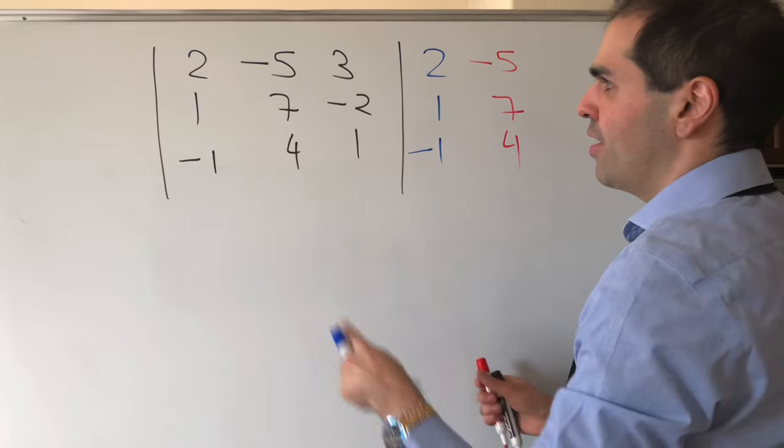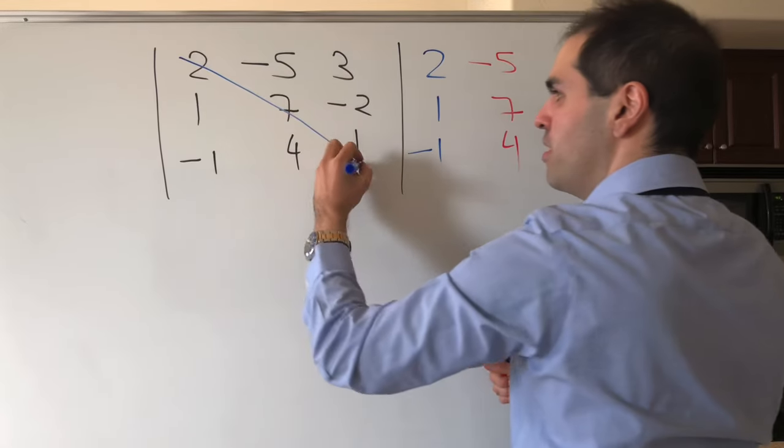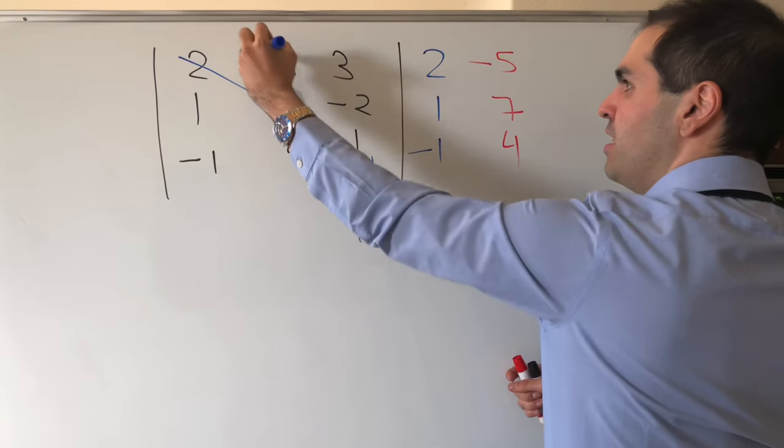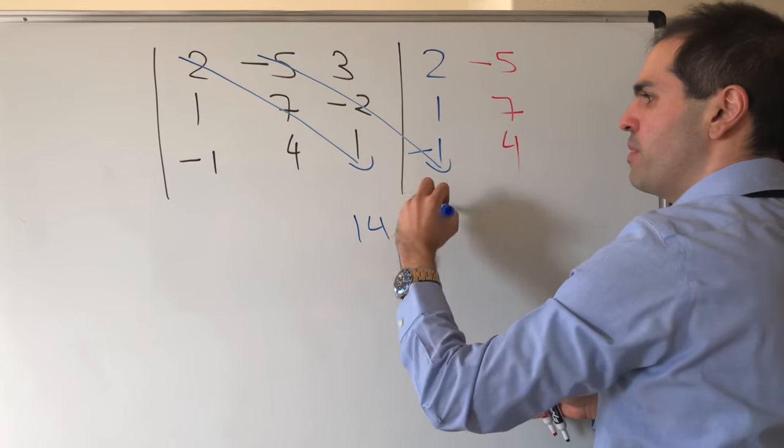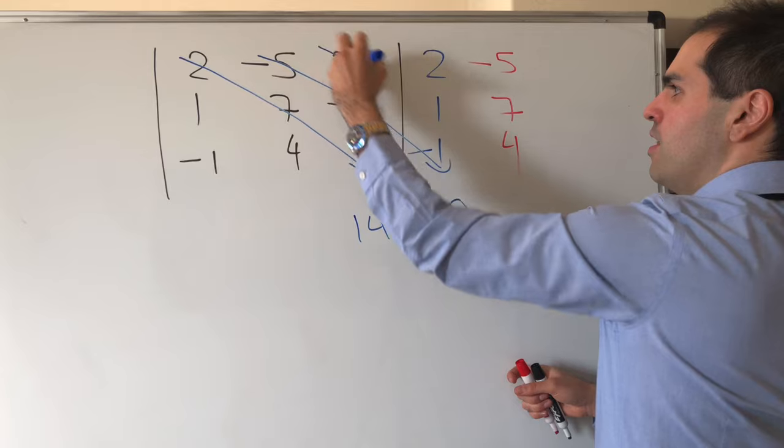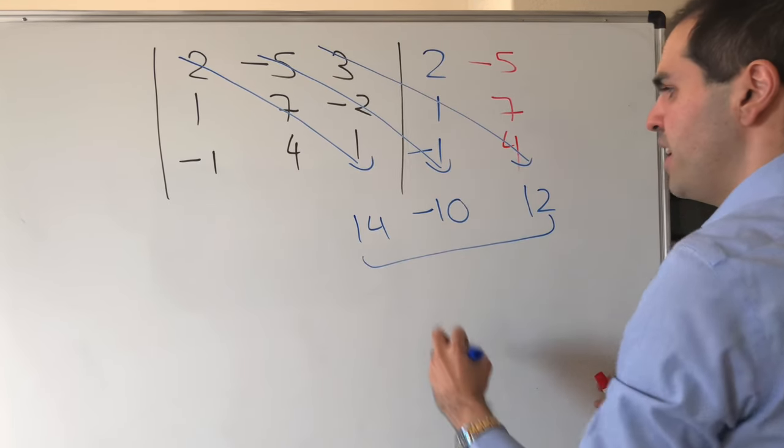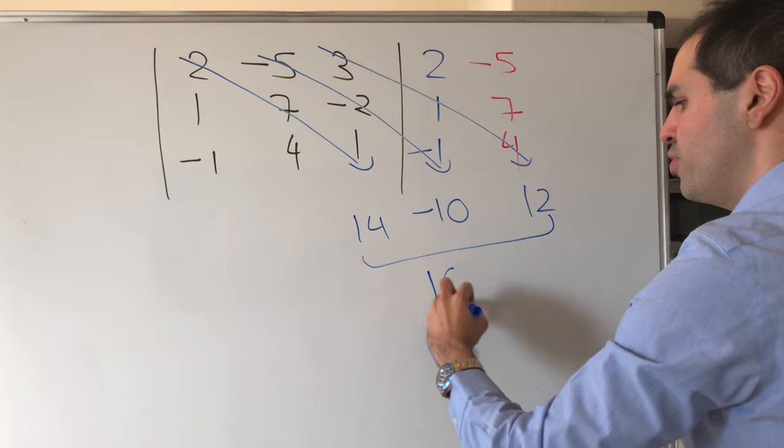You consider the diagonal terms and take the product, so 2 times 7 times 1, that's 14, and then continue, that becomes minus 10, and then 3 times 1 times 4, that is 12, and you take the sum, which gives you 16.